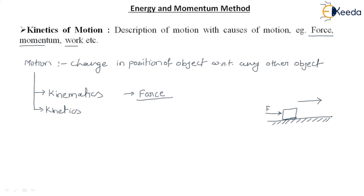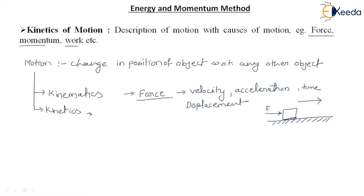In kinematics we don't describe motion with causes of motion. We describe motion with displacement, velocity, acceleration, as well as time. Now if we define the kinetics term, kinetics of motion defines or describes the motion with causes of motion. Here we consider all causes of motion like force, momentum, work, etc. We use the concepts of velocity, acceleration, displacement, and time, but we also consider the main causes of motion like force, energy, momentum, and work. This is the main concept of kinetics of motion.